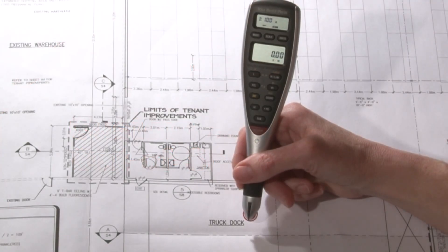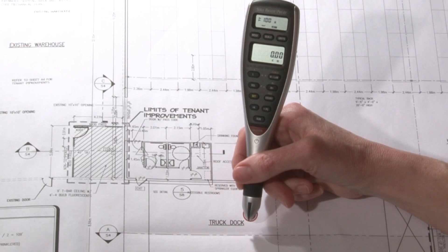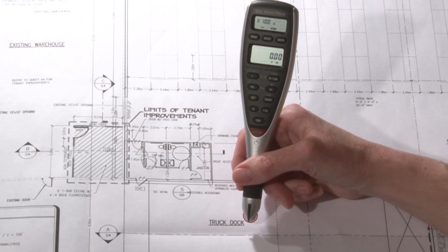Now I'm going to show you how to set a custom scale for out-of-scale plans. First, just to review, you can store up to 10 custom scales: five for metric and five for US.